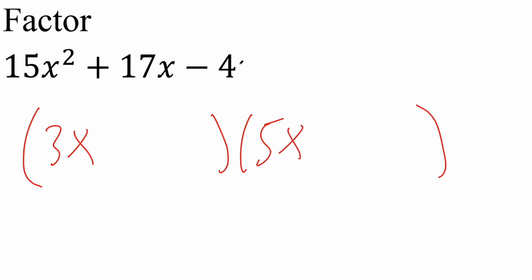Next we see we have a negative 4, and there's a couple ways to get that: 1 times negative 4, the reverse meaning 4 times negative 1, and 2 times negative 2. So let's try something. With practice you'll be able to spot this more easily, so I'm just going to try 2 and negative 2.